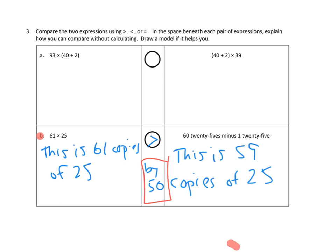61 copies of 25, 59 copies of 25. Two copies of 25 bigger over here. Two copies of 25 is 50. So it didn't even ask for this, but I'm going to go bonus on them and say I know the left-hand side is bigger, and I know exactly how much it's bigger by 50. Awesome.